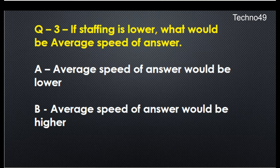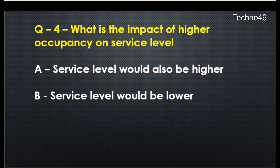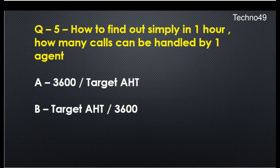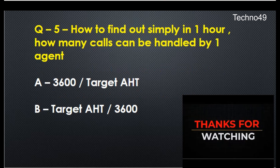The fourth question: what is the impact of higher occupancy on service level? The correct answer is that service level would be lower. Higher occupancy means we have back-to-back calls waiting and all agents are occupied on calls, which indicates that the service level would be lower.